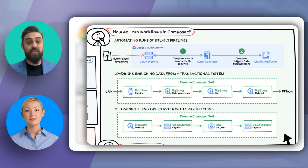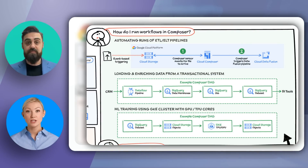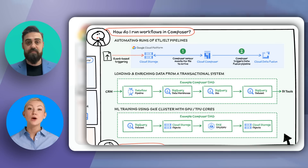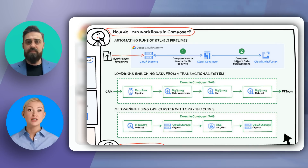Alright, the big question. How do we run workflows in Cloud Composer? Let's break it down. You start by creating a DAG in Airflow, then deploy it in Composer. Composer will manage the workflow execution based on the triggers you define, like time or events.